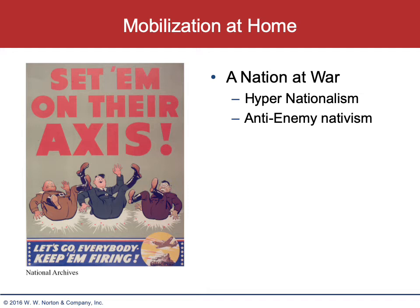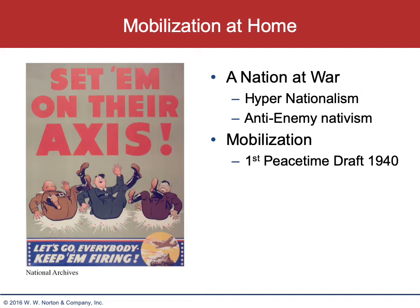The anti-enemy nativism was particularly strong, as we will see with the Japanese internment. Mobilization had really started in 1940 with the first peacetime draft. Approximately two million soldiers were drafted for a two-year stint, ending in 1942, but most of those men would voluntarily re-up their assignments. This produces iconic terms in American language: 1-As and 4-Fs. If you received your draft letter, you reported to the draft board, were reviewed, asked questions, and given a physical exam. If you were considered at the top of physical ability — the best type of recruit — you were labeled a 1-A.